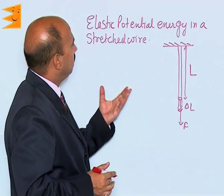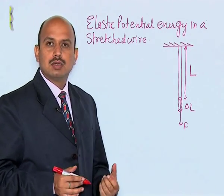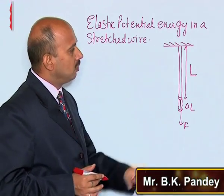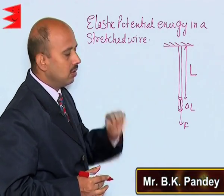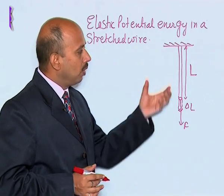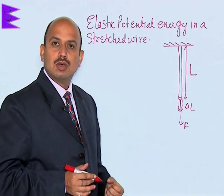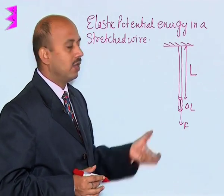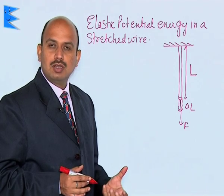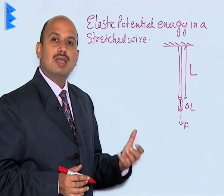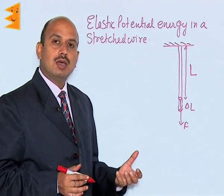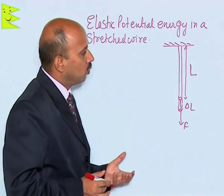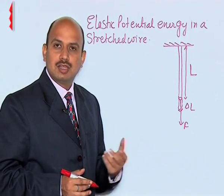Now, see elastic potential energy in a stretched wire - how this energy is stored. When you apply some force, internal forces between the particles or between the atoms of this wire oppose this external force. So some work is done, and this work done appears in the form of potential energy. This type of energy is known as elastic potential energy.